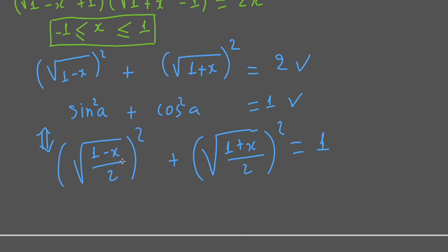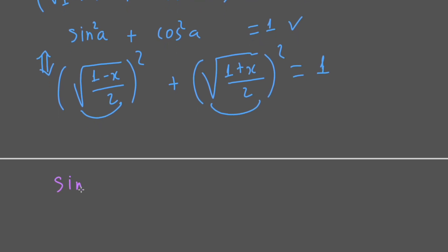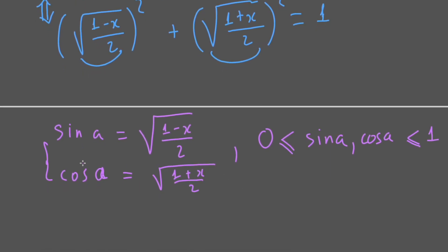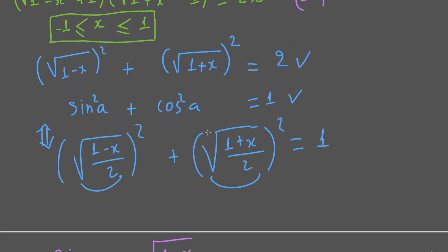This means we can apply a substitution under these expressions. We set sin a equal to the square root of (1 minus x)/2, and cos a equal to the square root of (1 plus x)/2. Remember that by definition sin a and cos a must each be less than or equal to 1 and greater than or equal to 0.